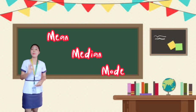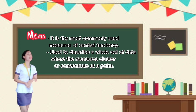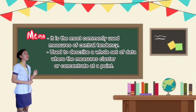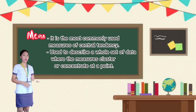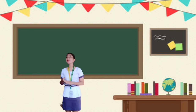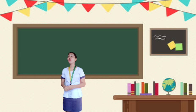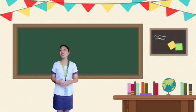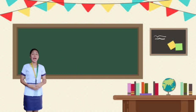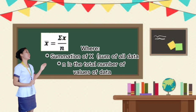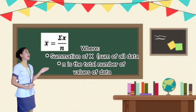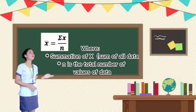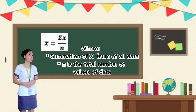In short, it is a measure that tells where the middle or center of the data set is located. There are three types of measures of central tendency — the mean, median, and the mode. Let's first tackle the mean. Mean is commonly used as a measure of central tendency and it is used to describe the whole set of data where the measures cluster or concentrate at a point.